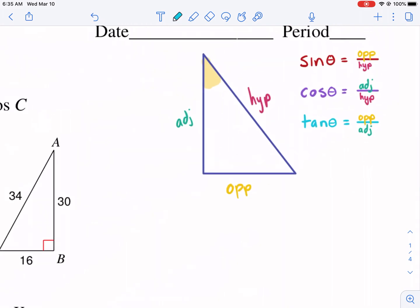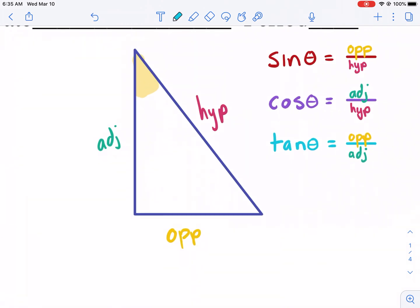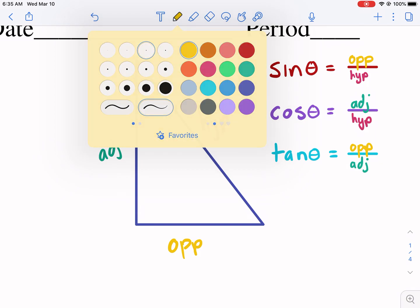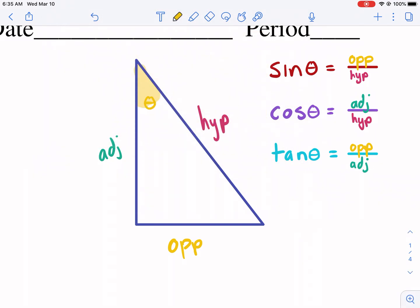Now before we get into the problems, we need a little bit of background on this topic. Sine, cosine, and tangent are the trigonometric ratios. What is it talking about?